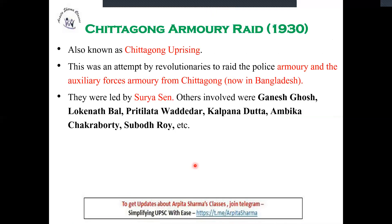Chittagong Armory Raid, India 1930, also called the Chittagong Uprising. Surya Sen was the leader of this raid. The logic was simple: no robbery, no murder — just raid the armory to prove that Indians are capable. Surya Sen led the raid at Chittagong, which is present-day Bangladesh. Others involved were Ganesh Ghosh, Lokenath Bal, Pritilata Waddedar, Kalpana Datta, Ambika Chakravarti, and Subodh Roy.